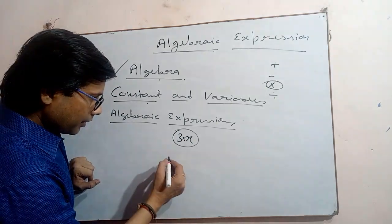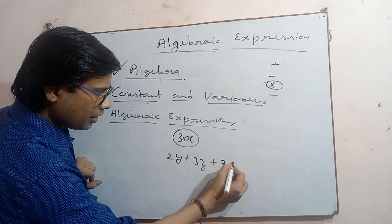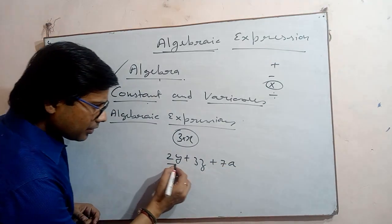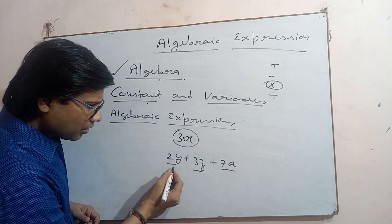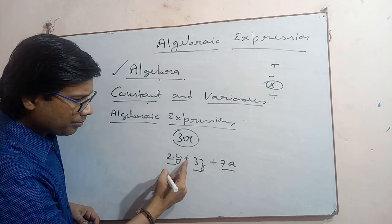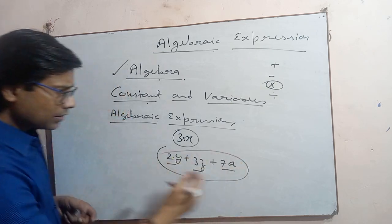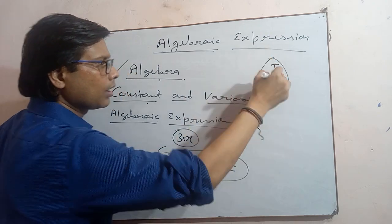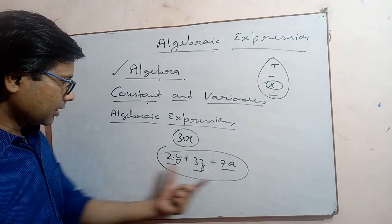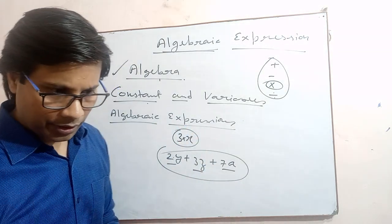Another example: 2y plus 3z plus 7a — when you are adding like this, every term is connected with operations. Between 2 and y there is multiplication, between 3z and 2y there is a plus sign, and so on. So there is a connection using mathematical operators, and this entire expression is called an algebraic expression.